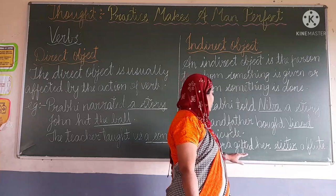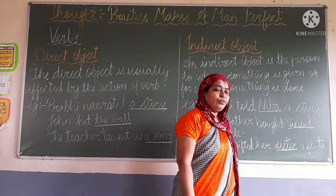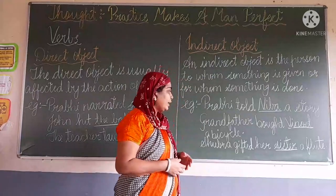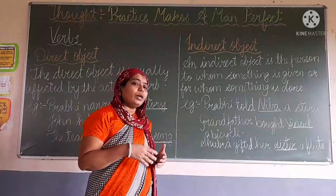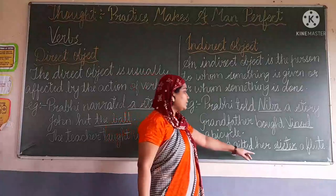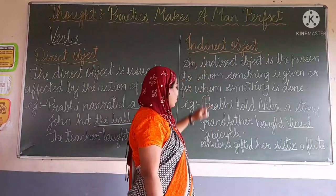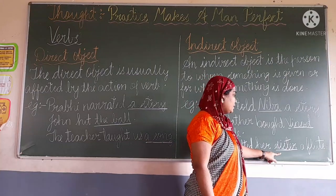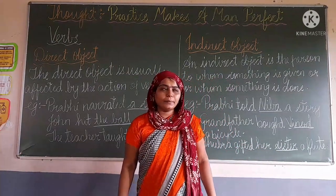Shubra gifted her sister a few. To whom did she gift? She gifted to her sister. So the word 'sister' is also the indirect object. Shubra gifted her sister a few.